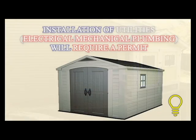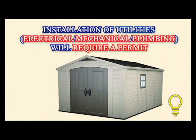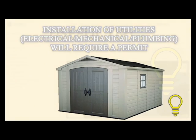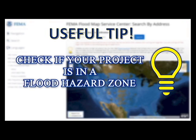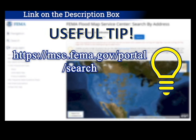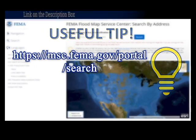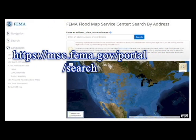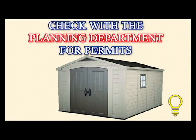Please note that installing electrical, mechanical, or plumbing within an exempt structure will require separate permits. Also, check if your property is located in a flood hazard zone, as this will further determine if your structure will need permits. You can search by address for properties located in a flood hazard zone using the provided link. For any accessory structure exempt from a building permit, always check for local planning department restrictions before construction.